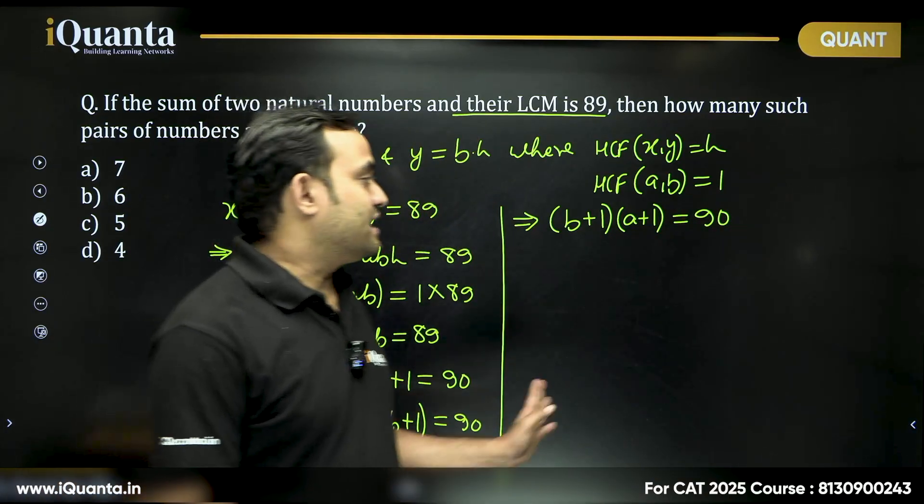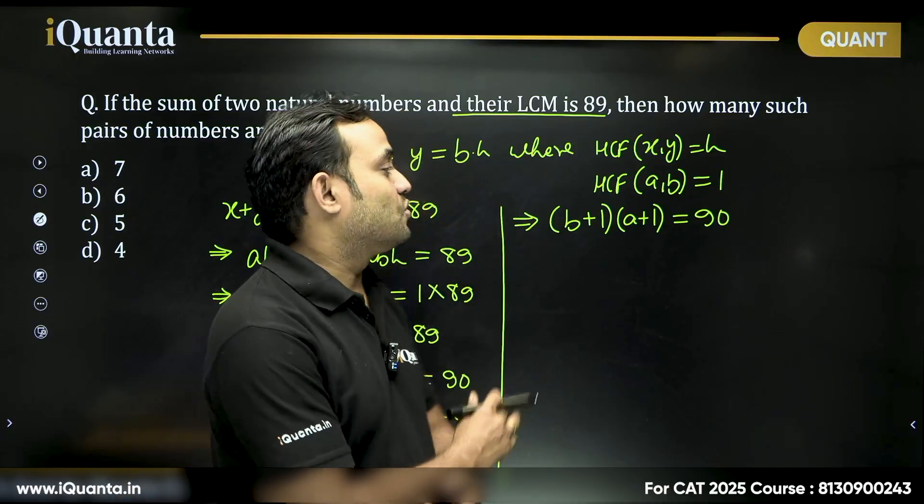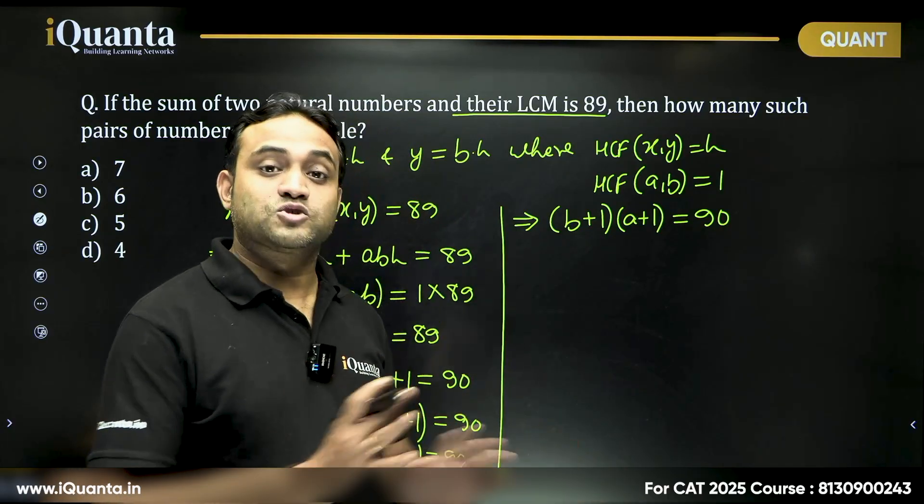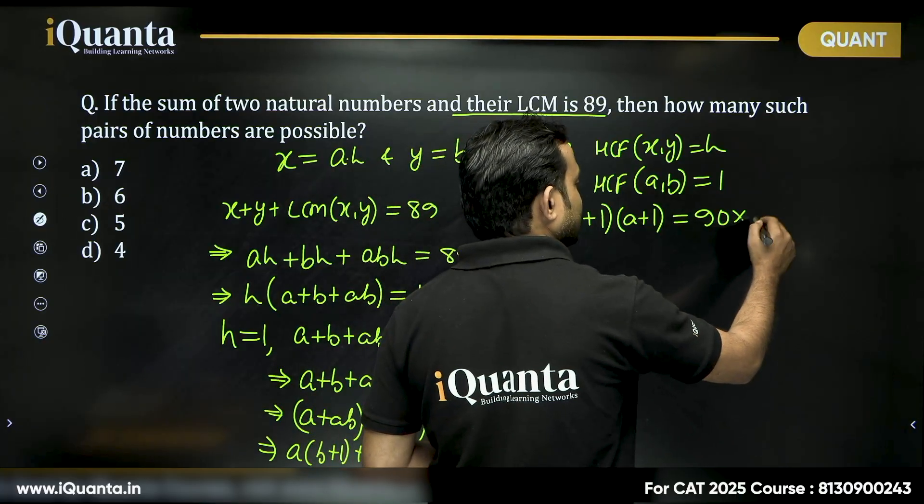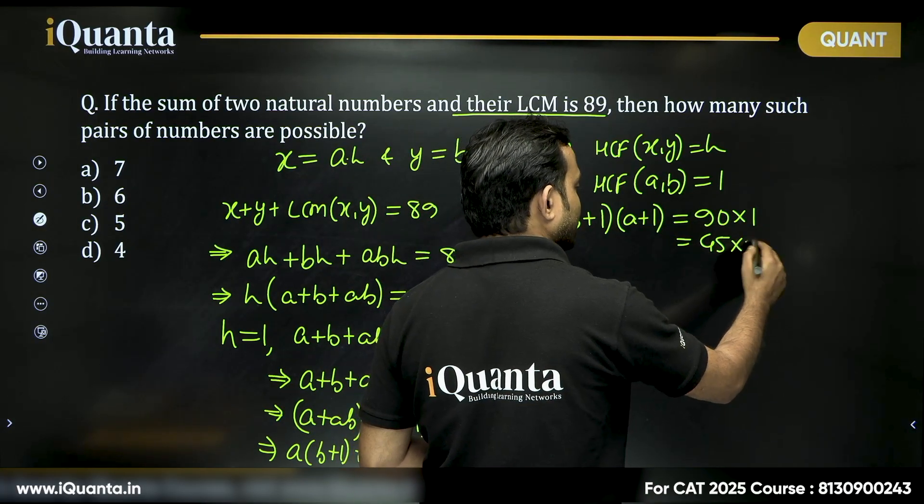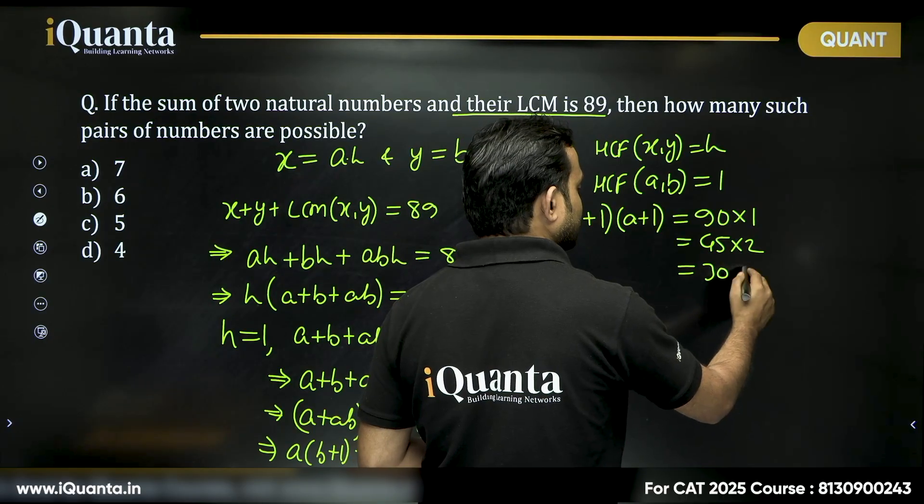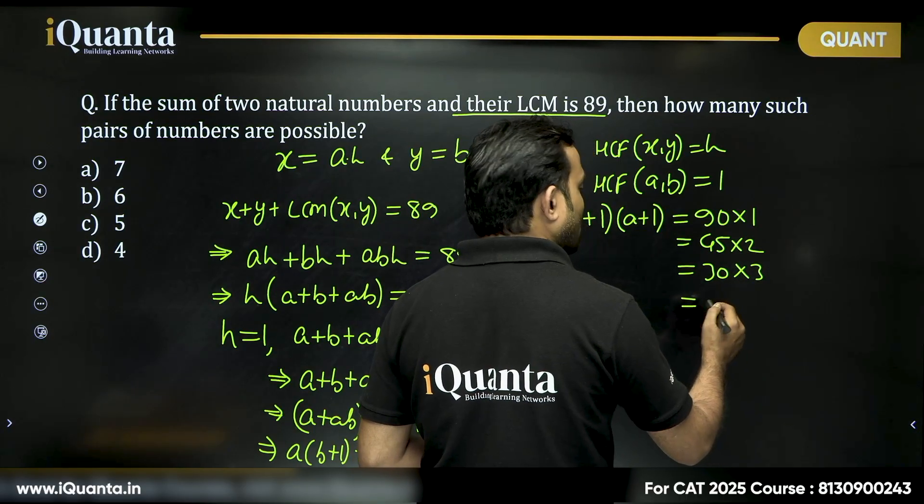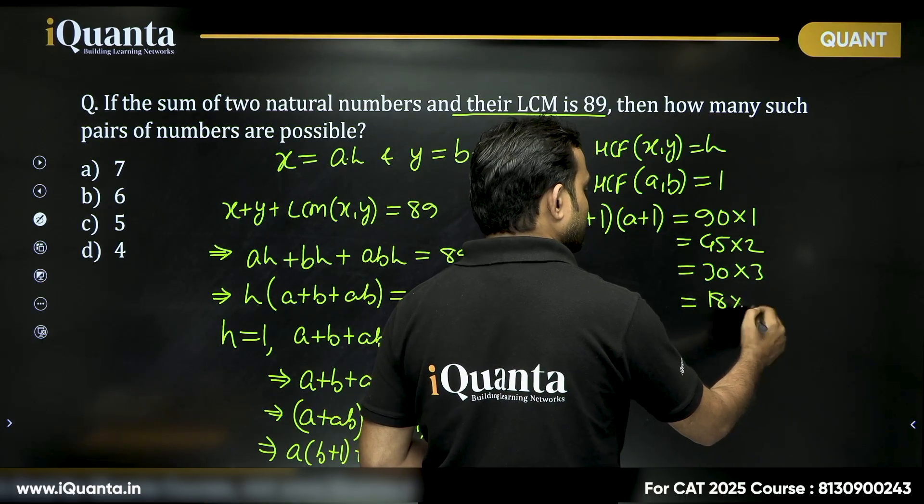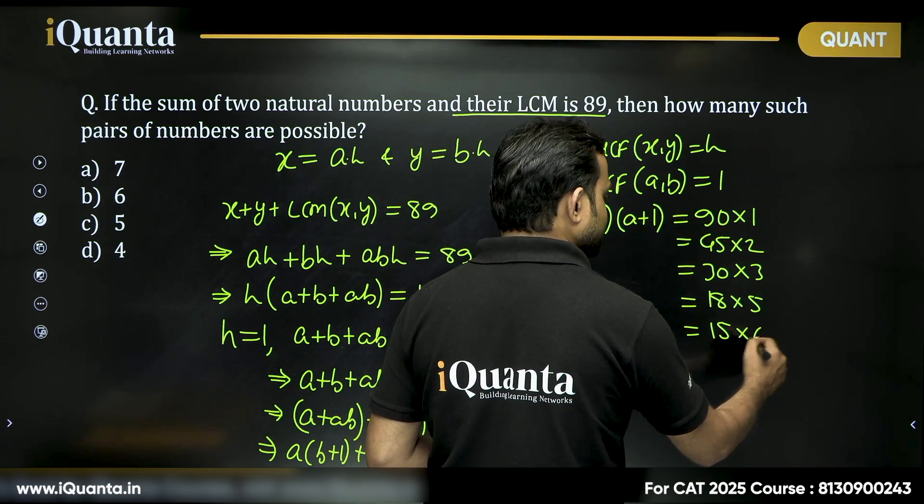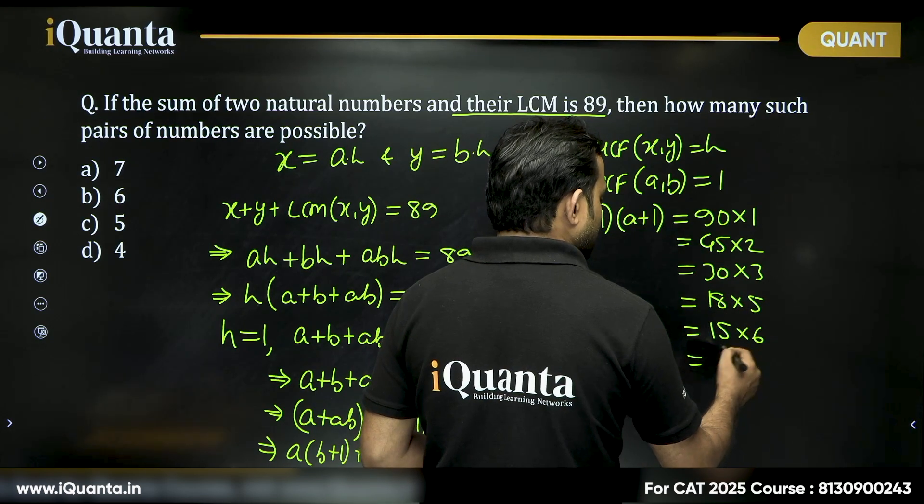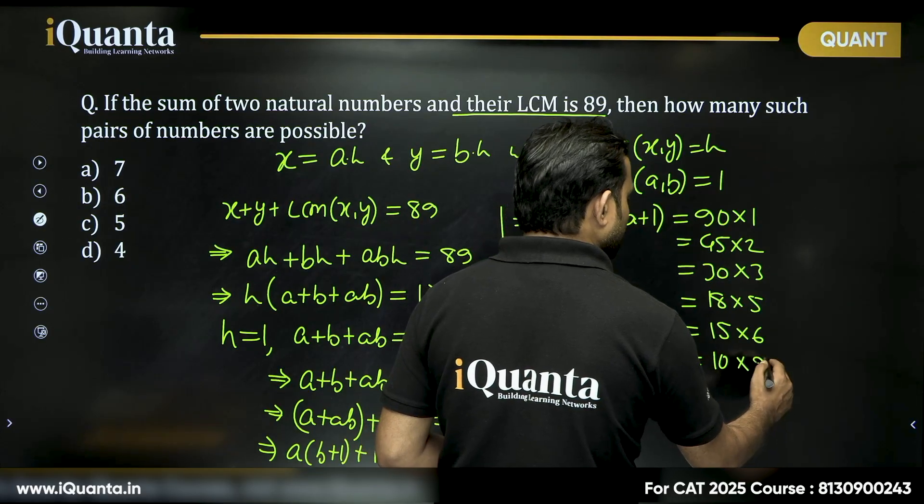We know that A and B are natural numbers, so the right-hand side product should also be written as the product of two natural numbers. 90 can be written as 90 into 1, or 45 into 2, or 30 into 3, or 18 into 5, or we can say 15 into 6, then 10 into 9 as well.